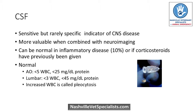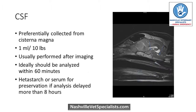In about 10% of inflammatory diseases like GME, you're going to have a normal CSF — so a normal CSF doesn't always rule it out, but it is a sensitive test. There are two places to collect CSF: the cisterna magna, which is between the skull and C1, or the lumbar spine. Most of the time, we image first and then tap afterward, because there can be instances where doing a CSF tap is very risky or contraindicated — for example, if there's a definitive tumor.